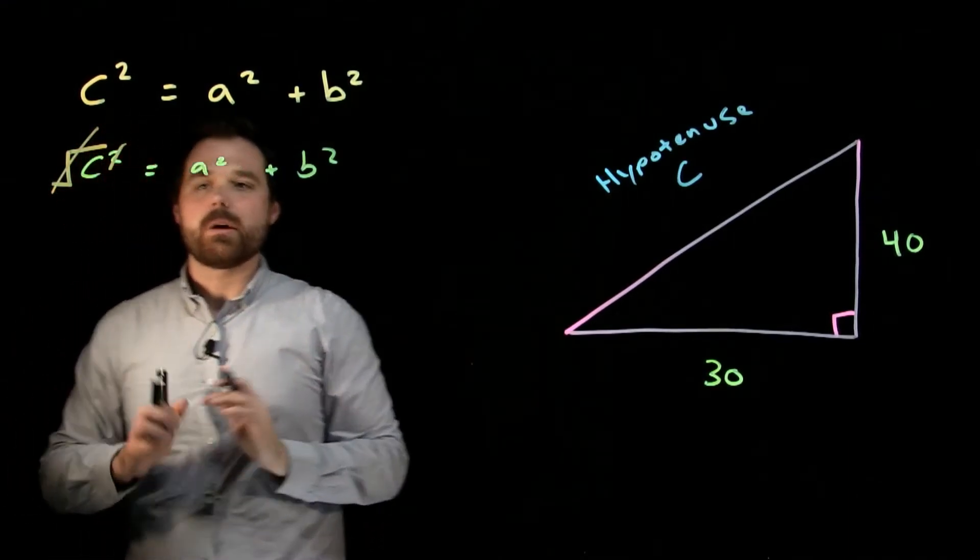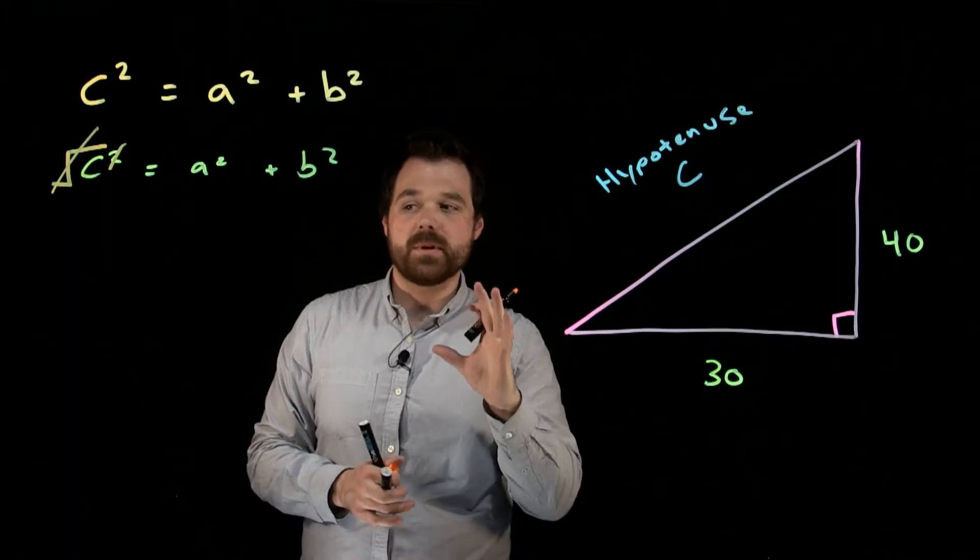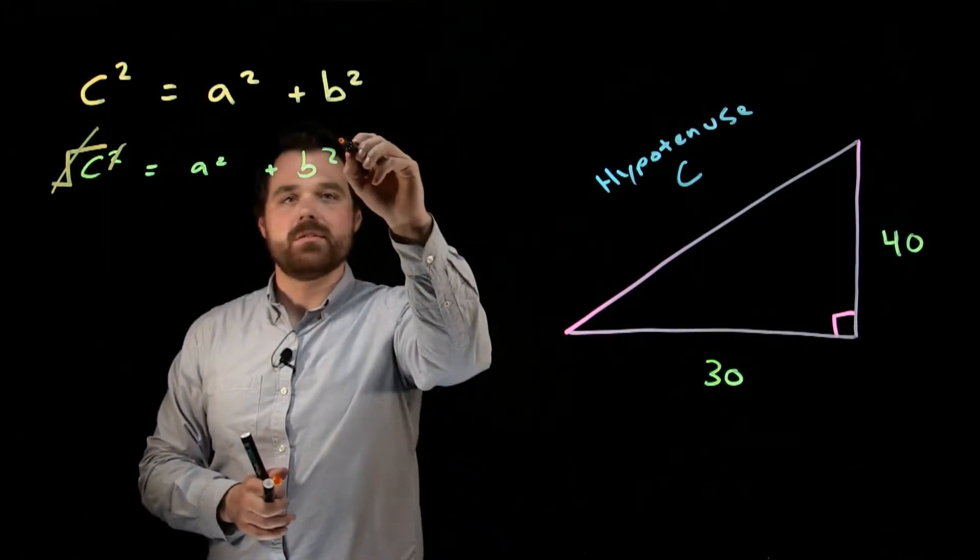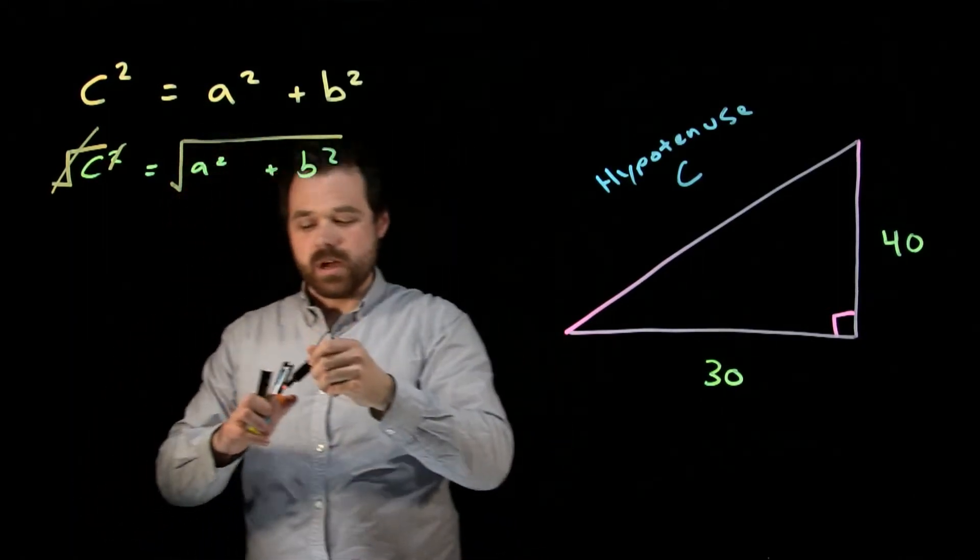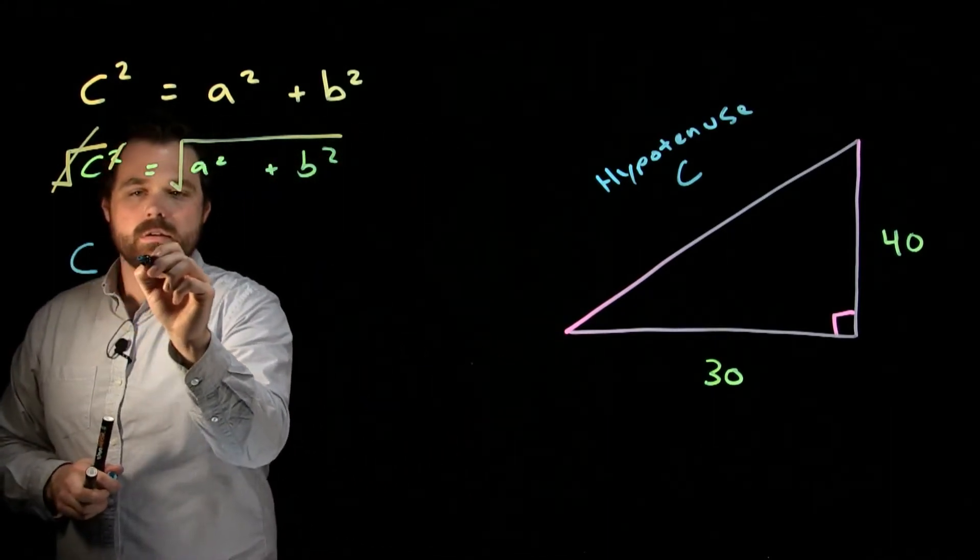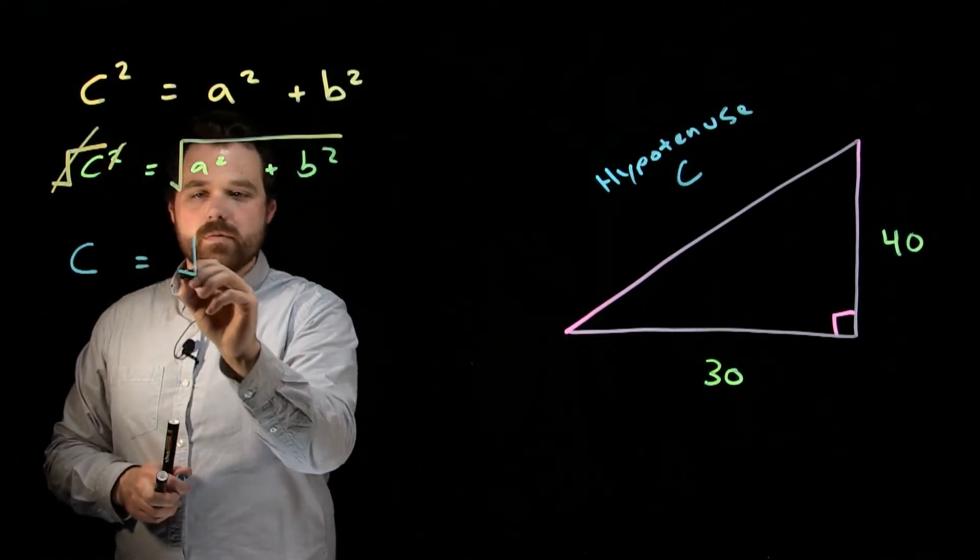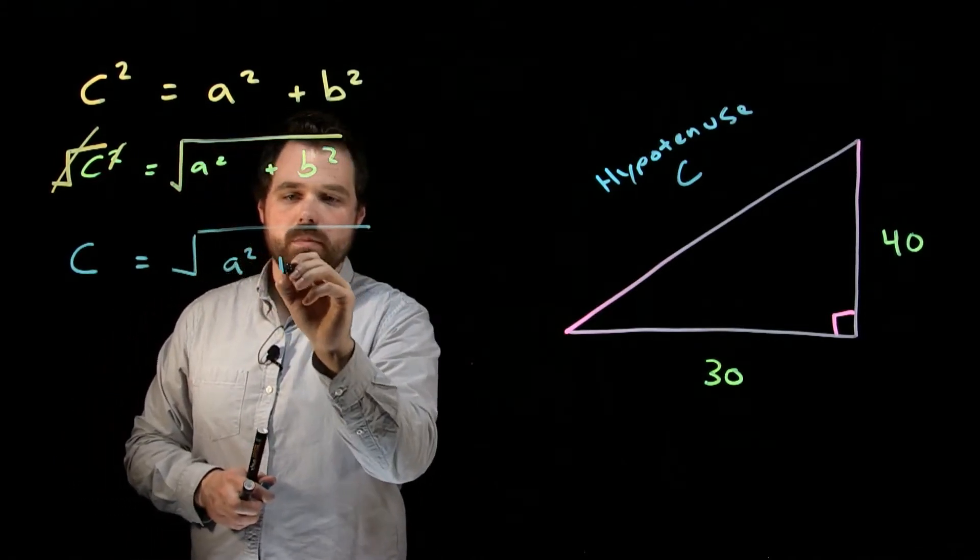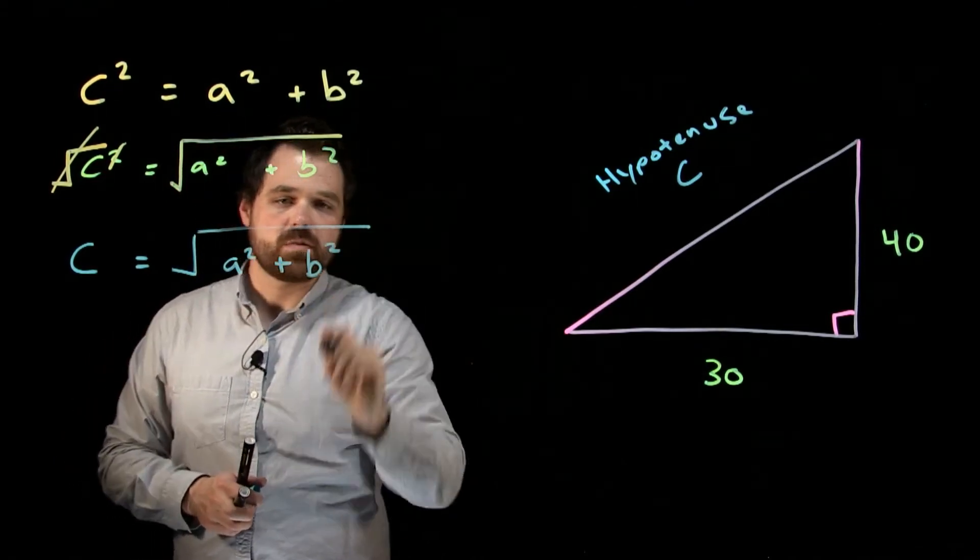So those will cancel each other out. Remember, whatever we do to one side of a formula, we have to do to the other. So what we end up with is C equals the square root of A squared plus B squared.